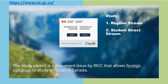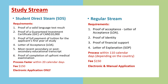You can choose from applying through the regular stream or SDS, the Student Direct Stream. The requirements for the Student Direct Stream are: proof of a valid language test such as IELTS; proof of a Guaranteed Investment Certificate or GIC, which amounts to $10,000; proof of full payment of tuition for the first year of study; a letter of acceptance issued by the school; most recent secondary or post-secondary educational transcript; and proof of completion of an upfront medical examination. Processing time for SDS is within 20 calendar days and the fee is $150, electronic application only.